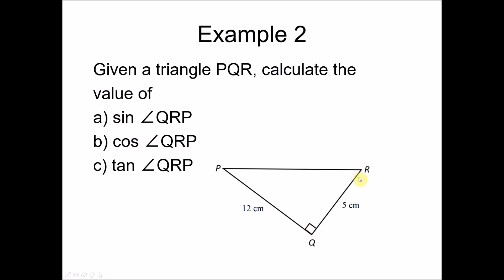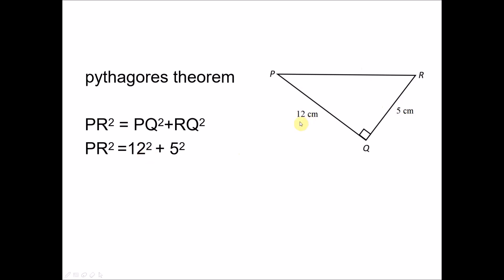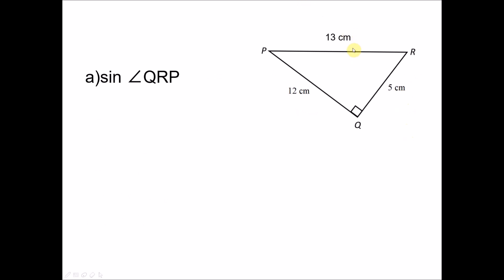For Example 2, we have a right angle triangle where two sides are given: PQ = 12 cm and QR = 5 cm. We first need to find PR using Pythagoras' theorem. PR² = PQ² + QR² = 12² + 5² = 144 + 25 = 169, so PR = √169 = 13 cm.